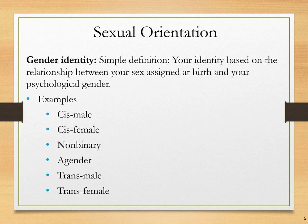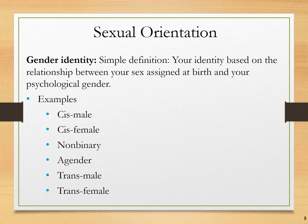Gender identity's simple definition is your identity based on the relationship between your sex assigned at birth and your psychological gender. Examples of gender identity include being a cisgender male — somebody whose biology matches that identity. Most of us in society, by matter of statistics, are cisgender. Other examples include cisgender female, non-binary, agender individuals — people that do not feel that they have a gender at all, which is different from being non-binary — transgender males, and transgender females. This is not an all-inclusive list; these are just the gender identities we most frequently talk about.